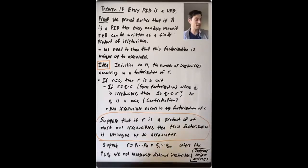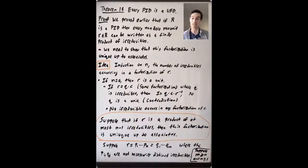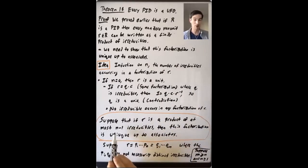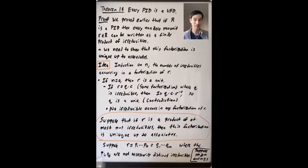Now for the inductive step. Suppose that if r can be written as a product of at most n minus one irreducibles, then that factorization is unique up to associates.